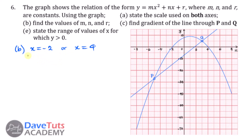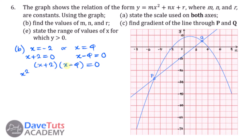We can reverse-engineer these roots to get our quadratic equation. Adding 2 to both sides gives x + 2 = 0, and subtracting 4 gives x − 4 = 0. Combining these: (x + 2)(x − 4) = 0. Expanding: x² − 4x + 2x − 8 = 0, which simplifies to x² − 2x − 8 = 0.